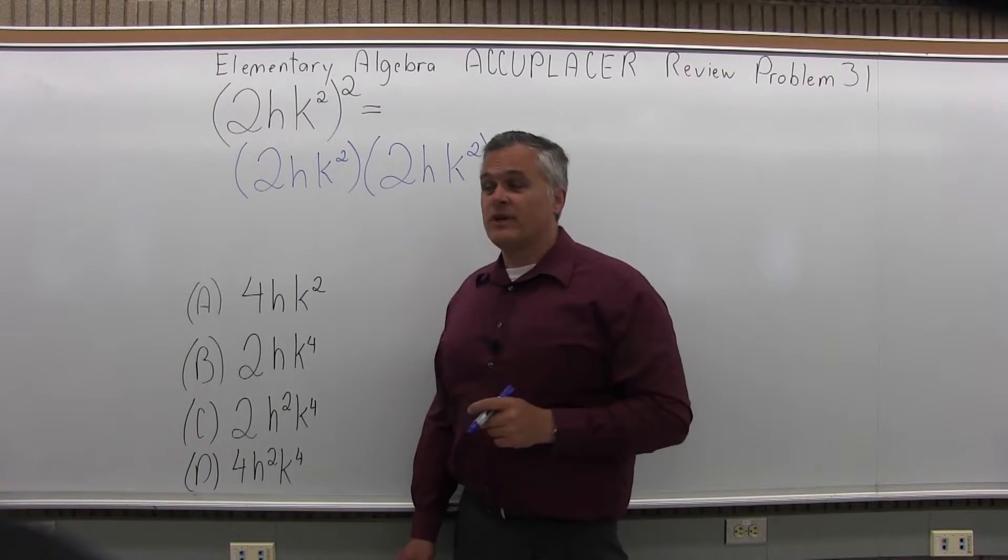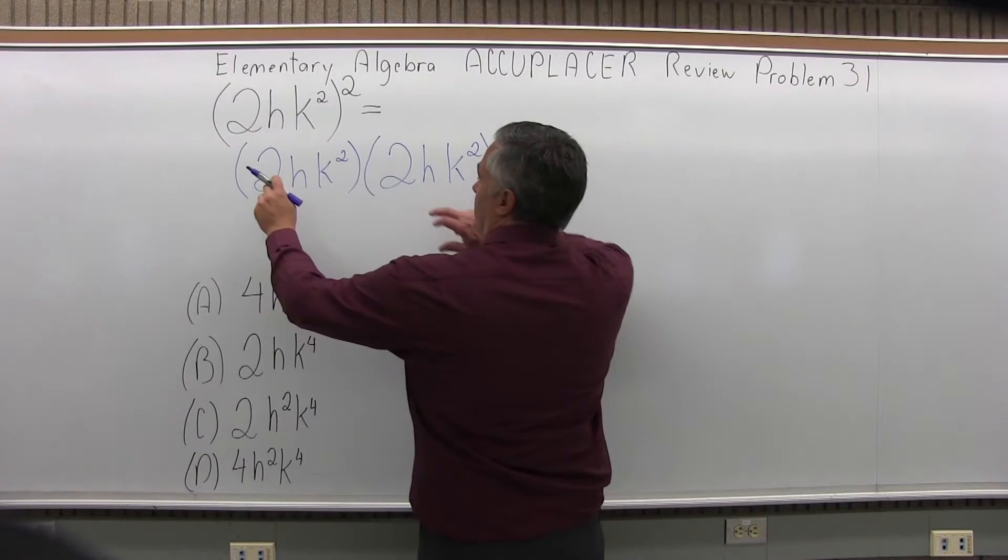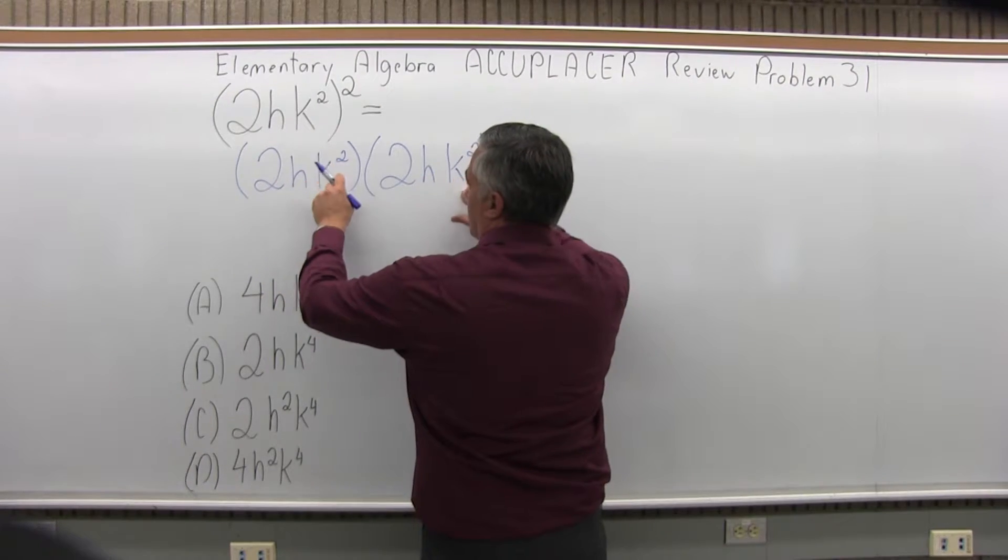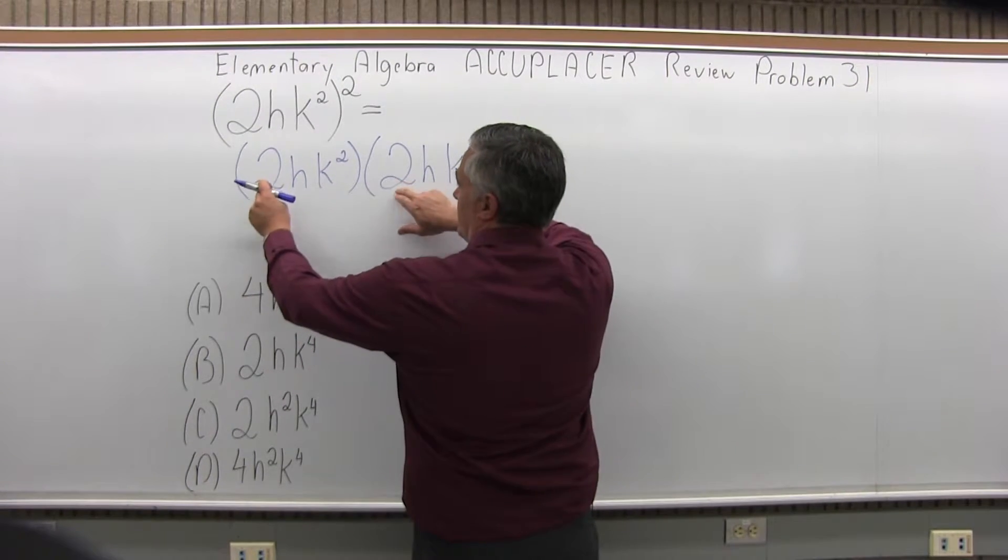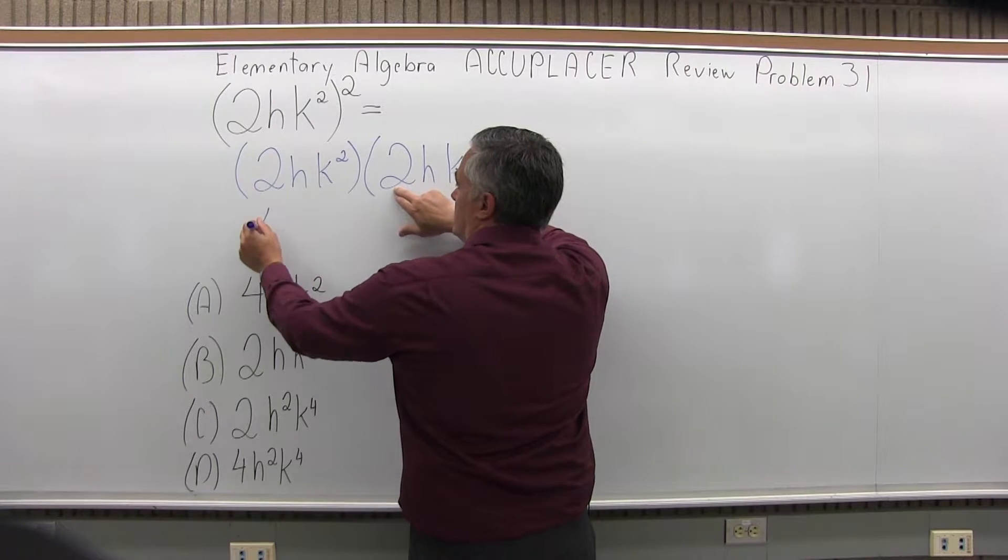So now what we have is a problem where we want to multiply the numbers together, the H's together, the K's together, and get an answer. So for the numbers, I have 2 times 2, which is 4.